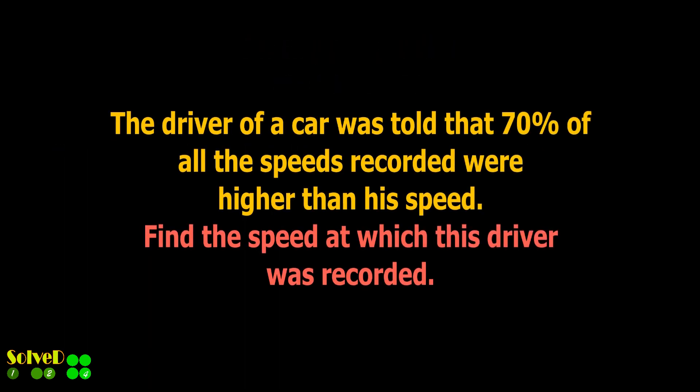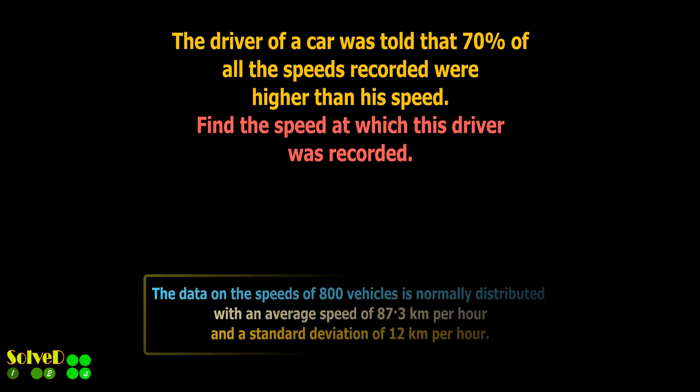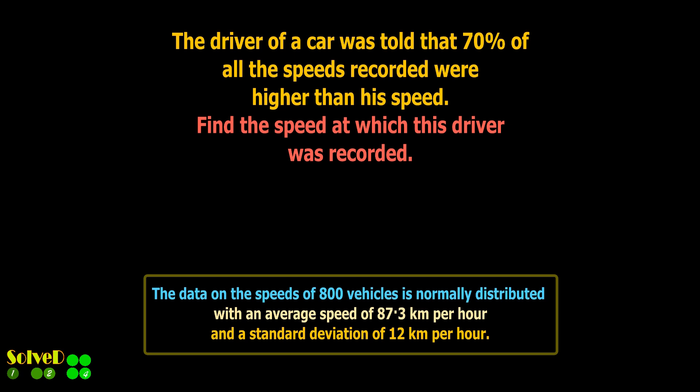Consider an example. The driver of a car was told that 70% of all the speeds recorded were higher than his speed. Find the speed at which this driver was recorded. The standard deviation and the mean of the recorded data are given.